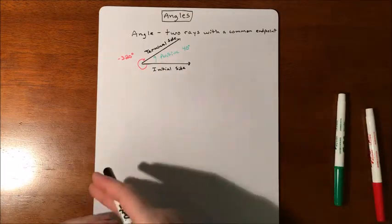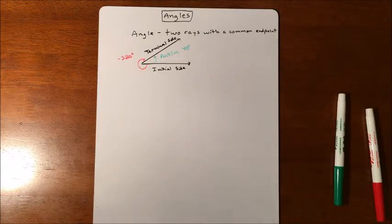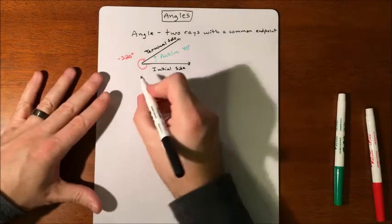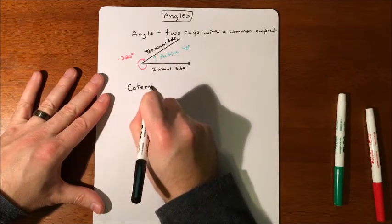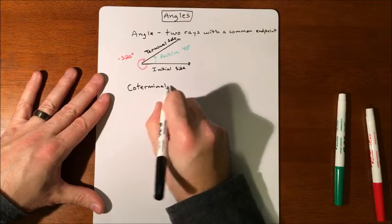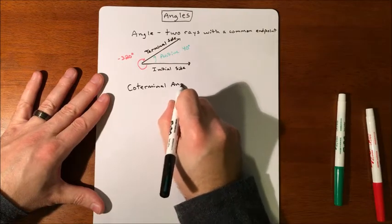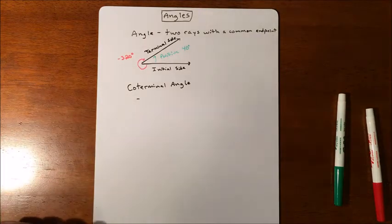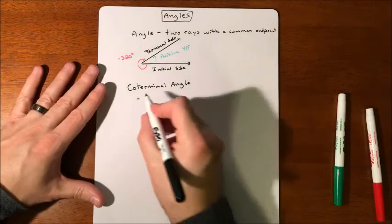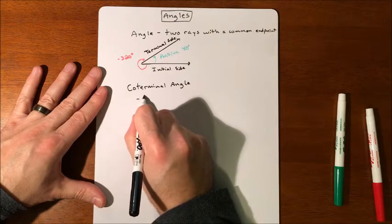So if you know one, you can always figure out the other. Those two angles are known as coterminal angles. Coterminal angles have the location of the terminal side are the same.